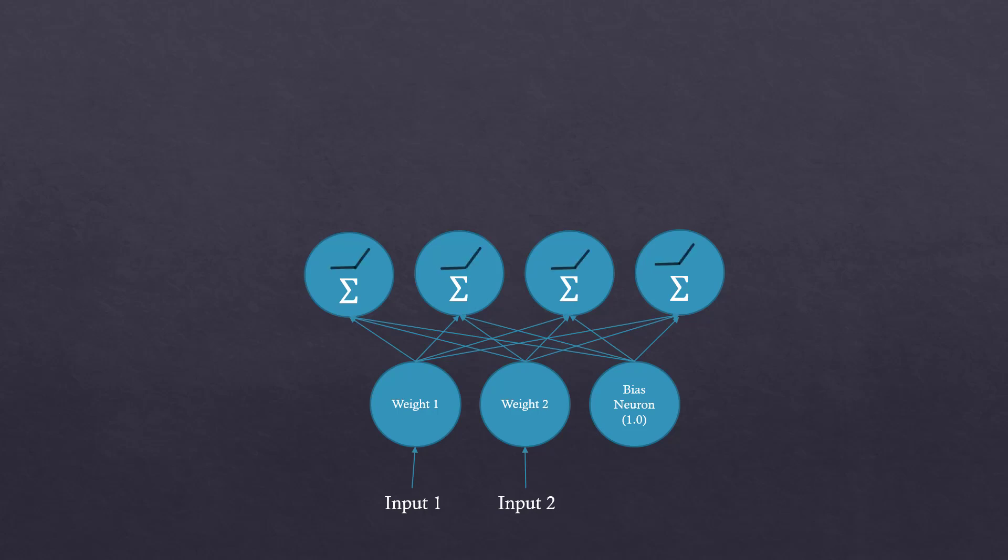We then apply what's called an activation function, represented by this little graph, that decides whether to fire off an output signal to the next layer of neurons, and if so, how strong that signal should be. We also have a bias term associated with this layer as well.